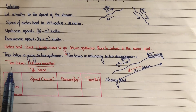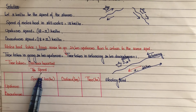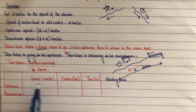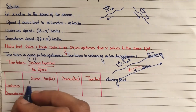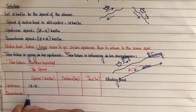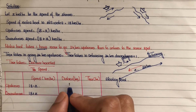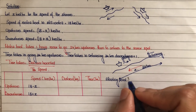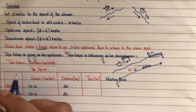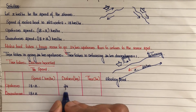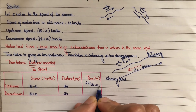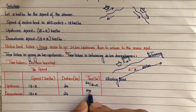We use the formula: time equals distance divided by speed. Setting up a table — upstream speed is 18 minus x km per hour; downstream speed is 18 plus x km per hour. Distance is 24 km in both cases. So time upstream is 24 divided by (18 minus x), and time downstream is 24 divided by (18 plus x).